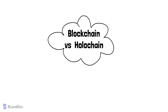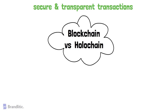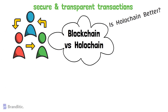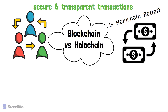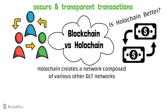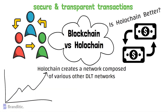Finally, blockchain versus holochain. Holochain seeks to turn everything on its head. Like blockchain, it allows secure and transparent transactions, but many consider it next-level. Where blockchain seeks to decentralize transactions so people can interact without a middleman, holochain wants to make interactions distributed. Holochain fundamentally creates a network composed of various DLT networks, making it essentially limitless in terms of scalability and transactions per second.